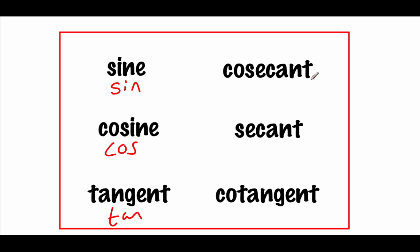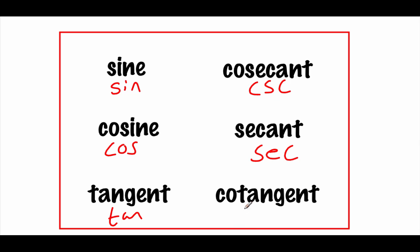We also have a few more trig functions to work with. One is called the cosecant, abbreviated C-S-C. For the secant, we abbreviate that S-E-C. And the cotangent is just C-O-T.